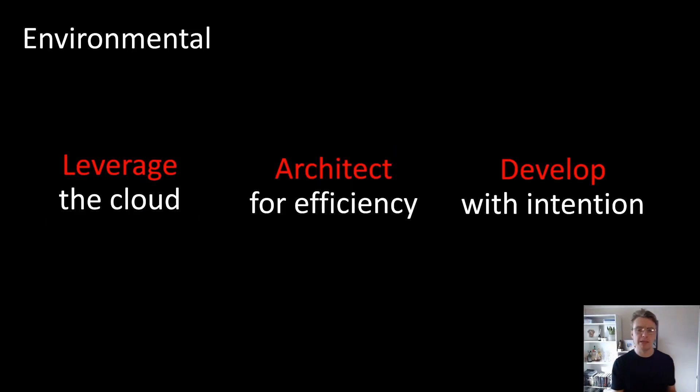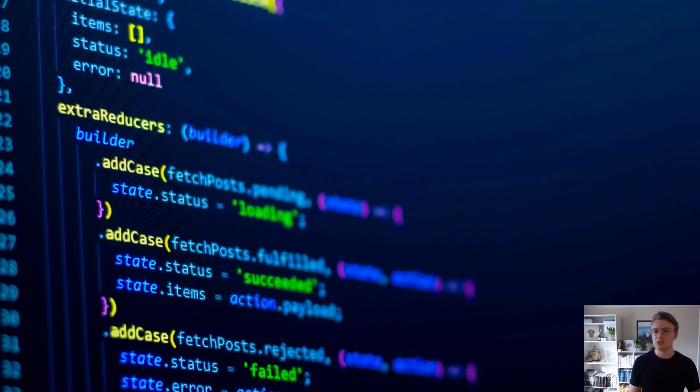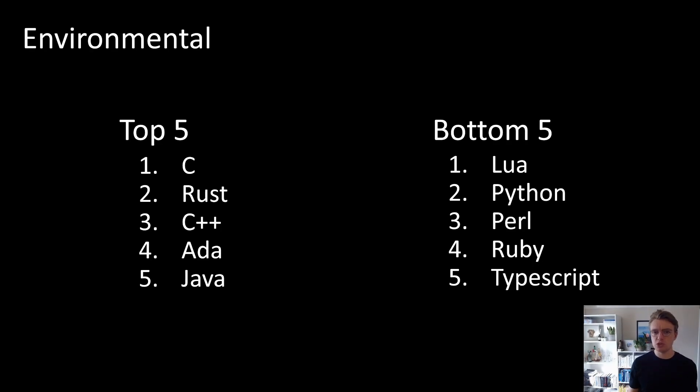And the final point around environmental is to develop with intention, and I mean that very specifically with the programming languages that we choose to use. A group of universities in Portugal ran a study on 27 of the most popular programming languages and solved 10 different computer science problems. They used that to look at the energy efficiency and power consumption of different programming languages. And if we look at the results, the top five of the big hitters are probably no surprise to many of you: C, Rust, C++, Java would probably be the surprising one for me.